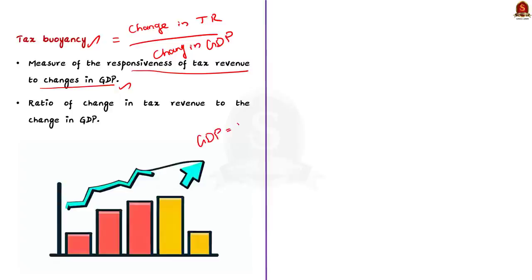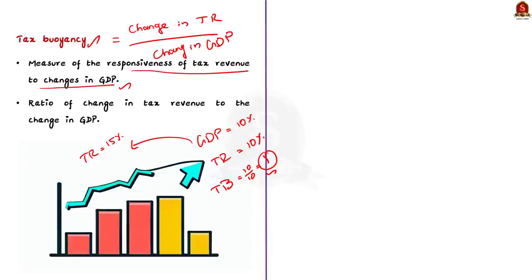If the tax revenue also increases by 10 percent, the tax buoyancy is 1. However, if in the same year the tax revenue increases by 15 percent instead of 10 percent, then the tax buoyancy becomes 1.5. This means that the tax system is able to generate more revenue as the economy grows. Governments all over the world prefer to have a tax system with higher tax buoyancy.